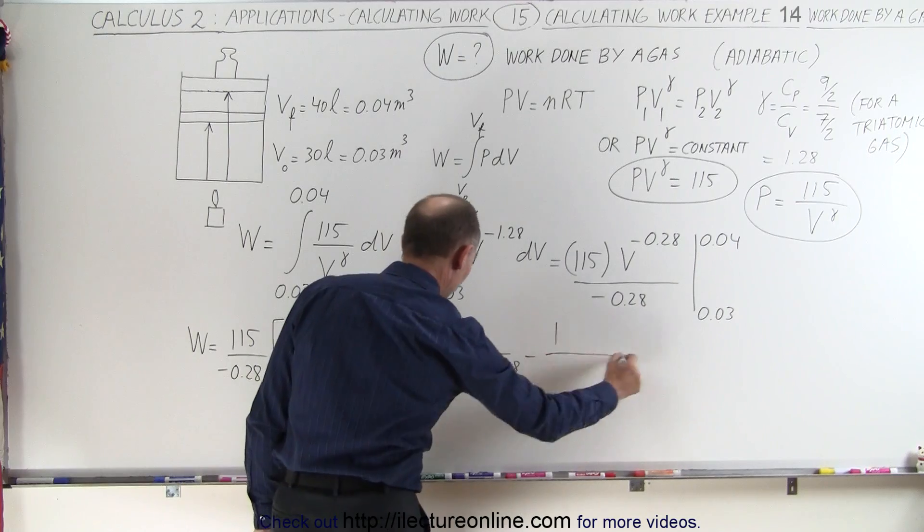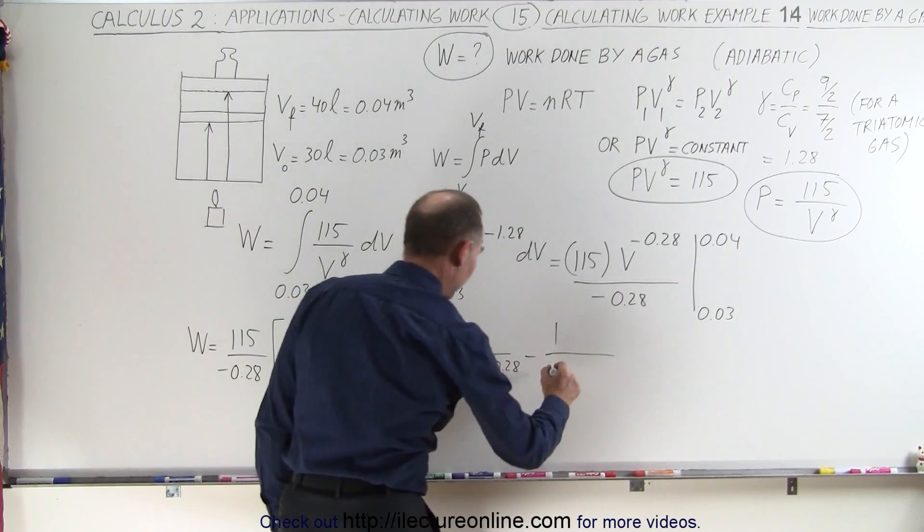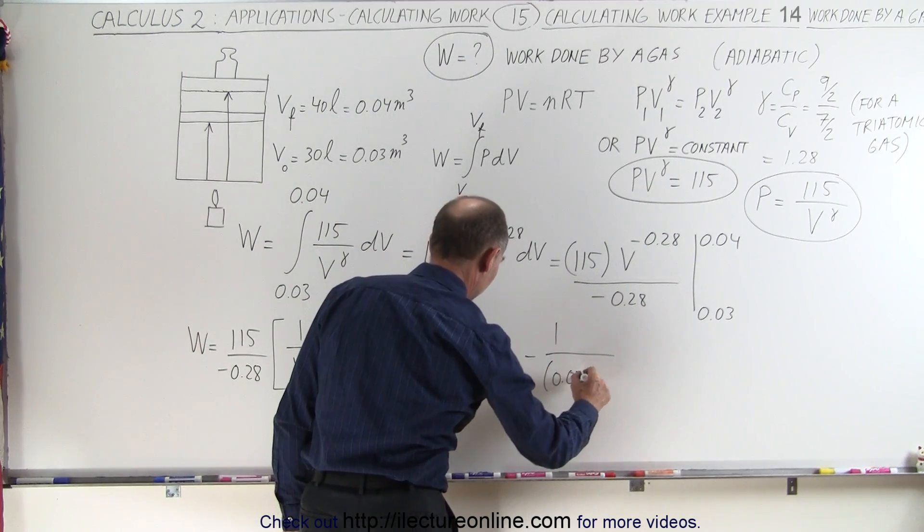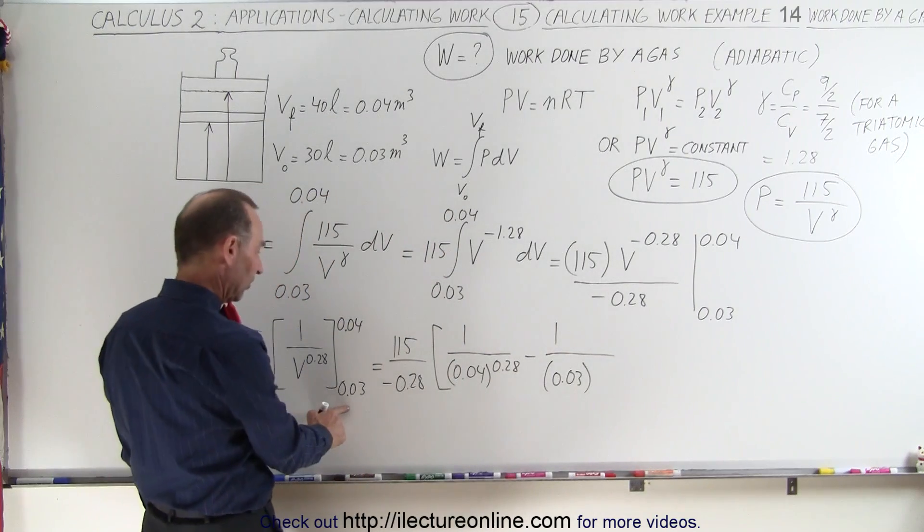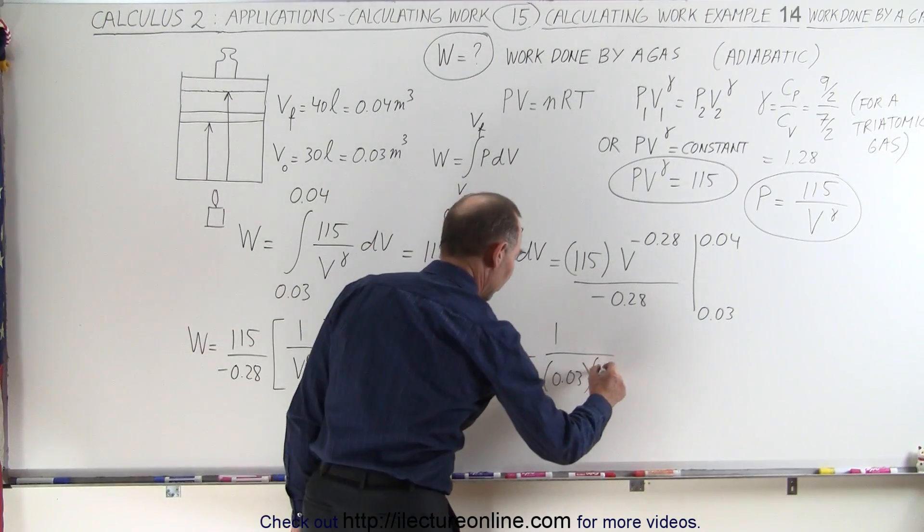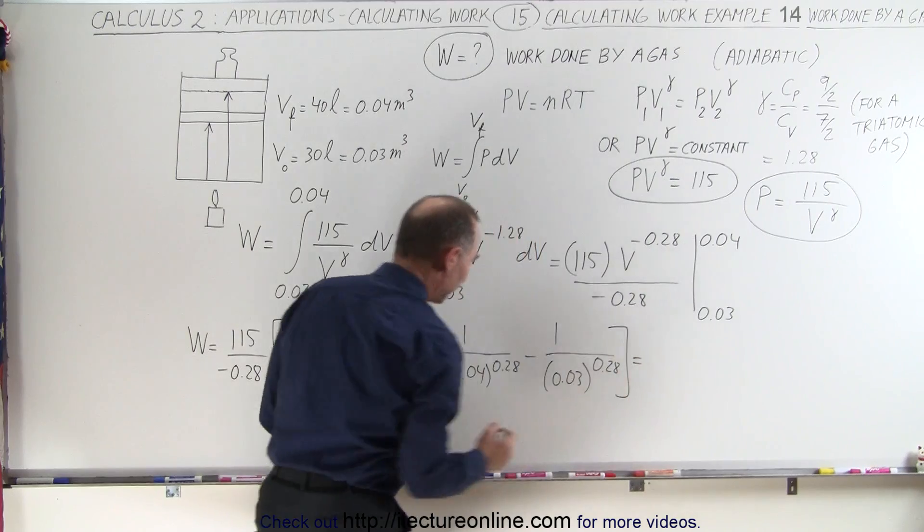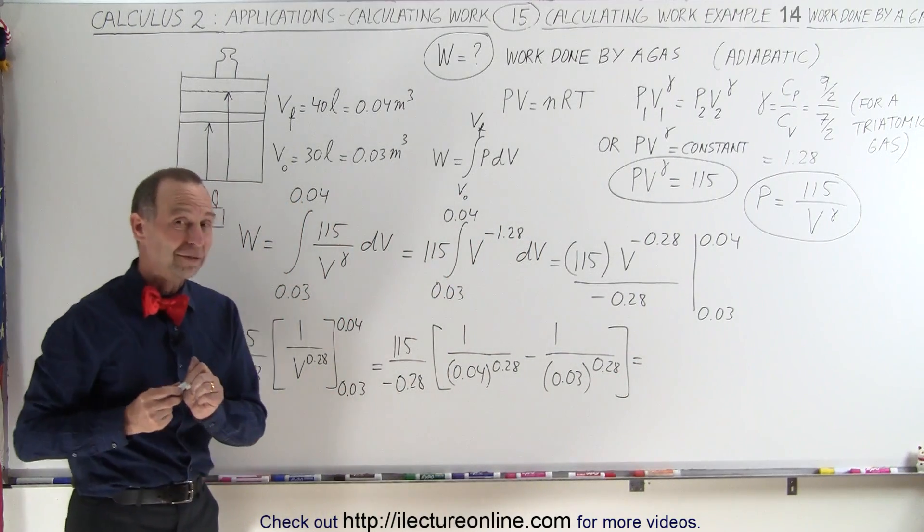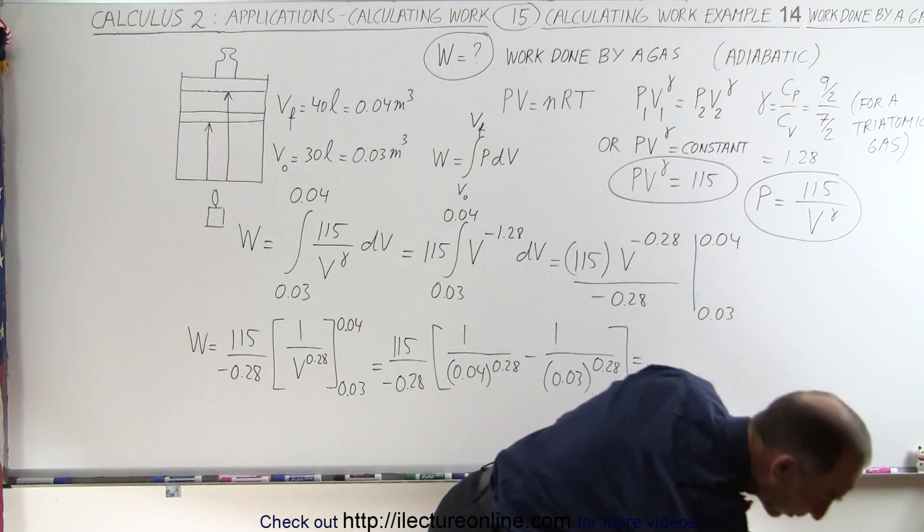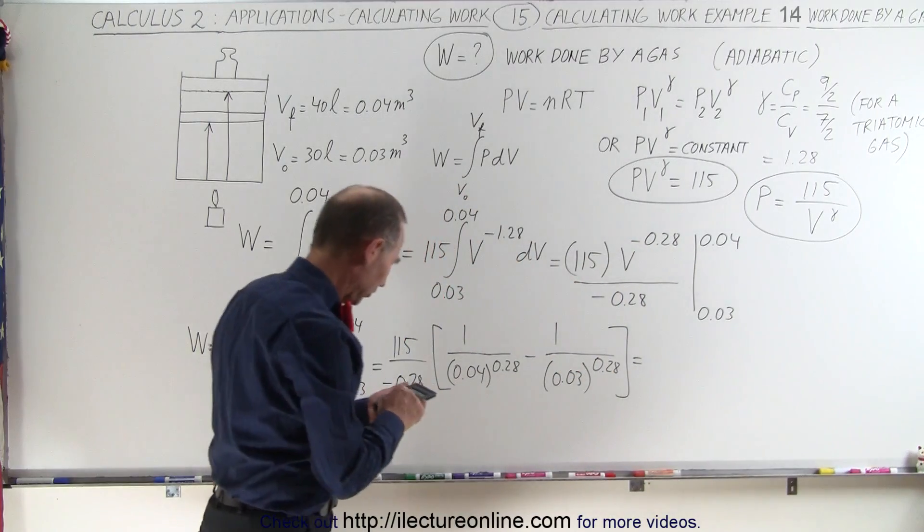Minus 1 over 0.03, because that's the lower limit, raised to the 0.28 power. Good thing we have calculators, because without calculators that would be quite difficult to do.